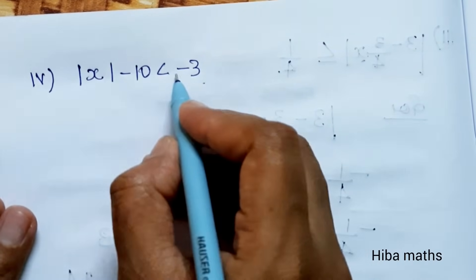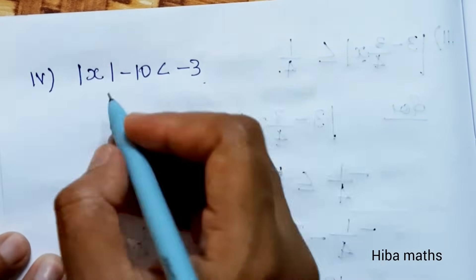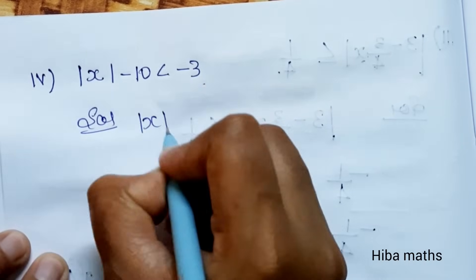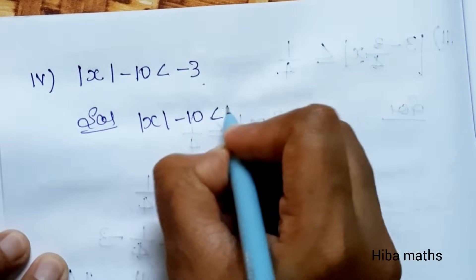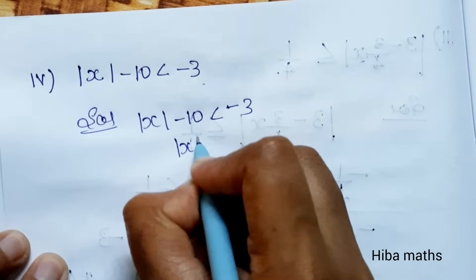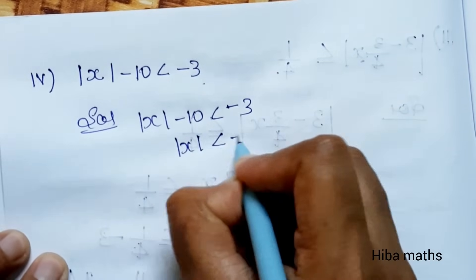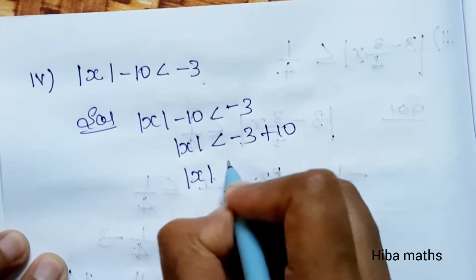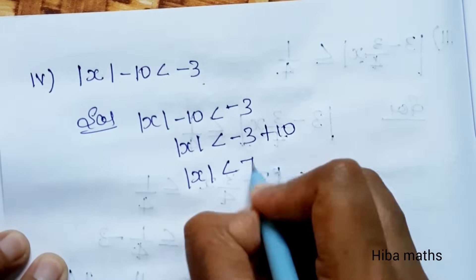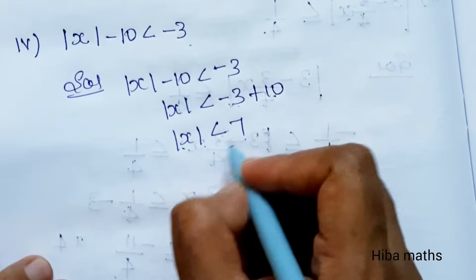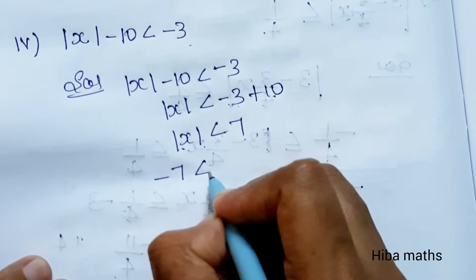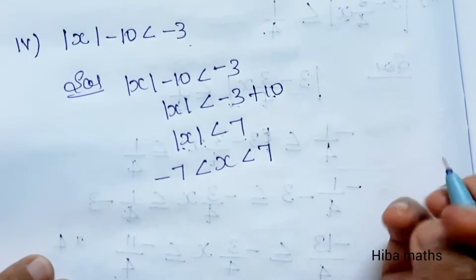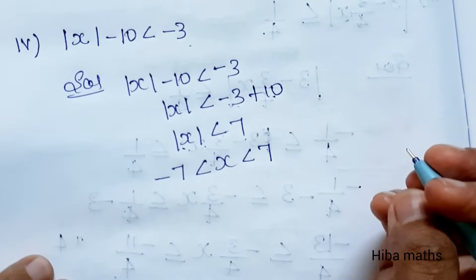Subdivision 4: Modulus of x minus 10 is less than minus 3. Since minus 10 is added, we add plus 10 to both sides. So modulus of x is less than minus 3 plus 10, which is 7. Therefore minus 7 is less than x is less than 7. It's very easy — try it yourself. Thank you so much for watching.